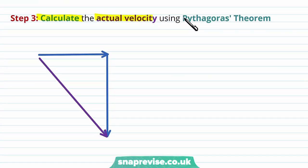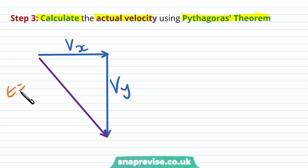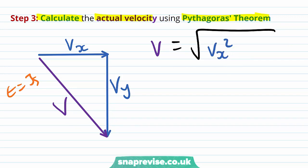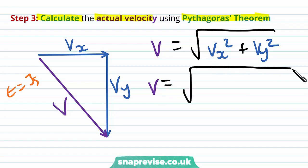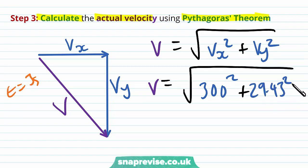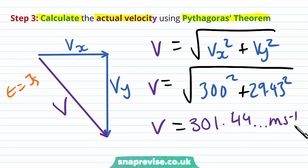Our next step is to calculate the actual velocity using Pythagoras' theorem. We know the horizontal component and we've found the vertical component of velocity at t equals 3 seconds. So v equals the square root of vx squared plus vy squared. Substituting in our numbers: v equals the square root of 300 squared plus 29.43 squared, giving a resultant velocity of 301.44 meters per second, which to three significant figures is 301 meters per second.